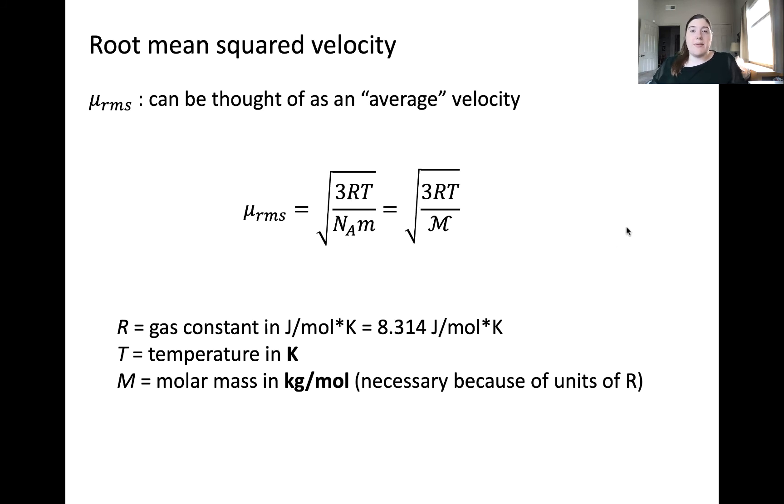This relationship can be summarized mathematically using the root mean squared velocity. This velocity is directly proportional to temperature and inversely proportional to molar mass. Note the units of molar mass based on the units of r. This value of r, 8.314 joules per mole kelvin, is selected to ensure that the units for root mean squared velocity are in meters per second.